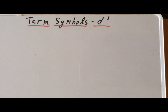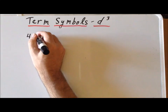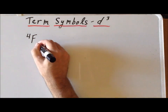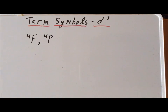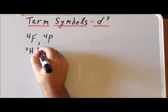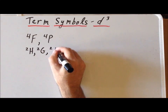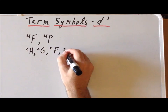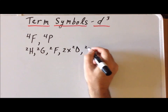Now we have derived all the spectroscopic term symbols for d³. We have two different quartet states: quartet F and quartet P. We also have a number of doublet states: doublet H, doublet G, doublet F, two doublet Ds, and a doublet P.